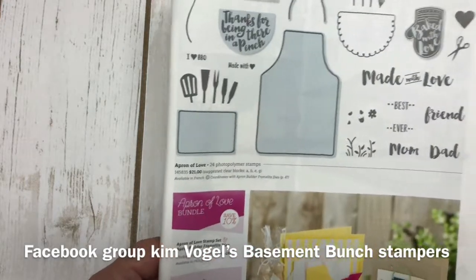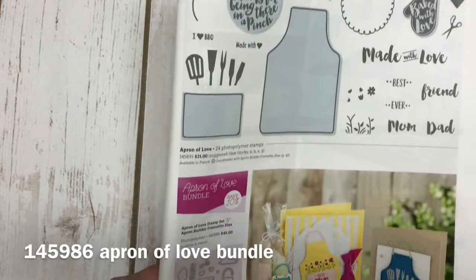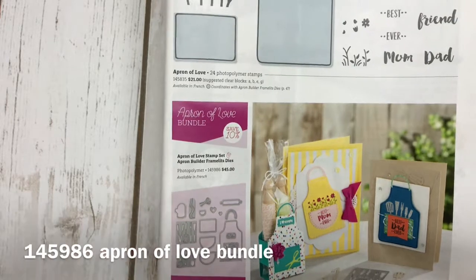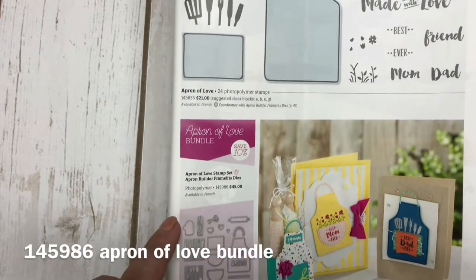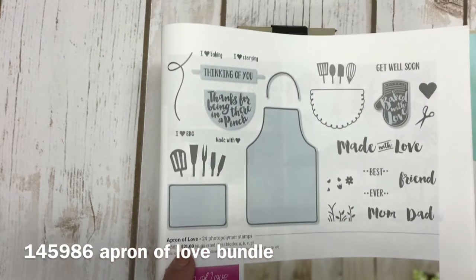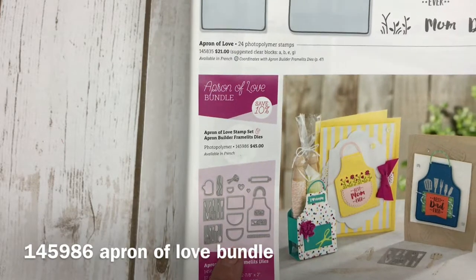This bundle is in our occasions catalog and one that did not catch my eye at first until I started playing with it. I spent the entire day Saturday doing just that and I absolutely fell in love with it. The bundle sells for $45 and includes the photopolymer stamp set and the coordinating framelits.